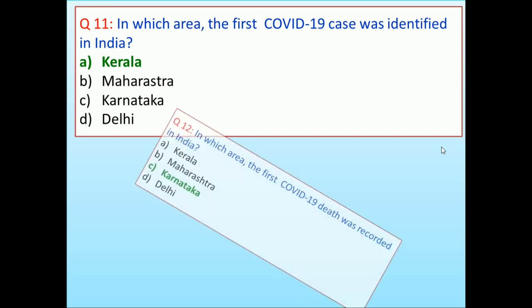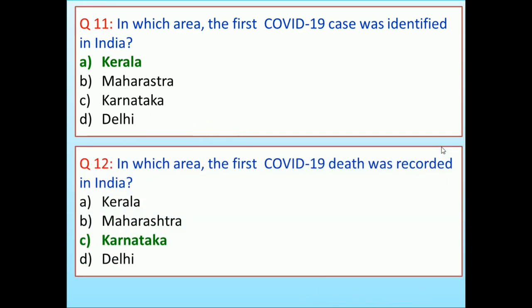In which area was the first COVID-19 death recorded in India? Kerala, Maharashtra, Karnataka, Delhi. Answer is Karnataka.